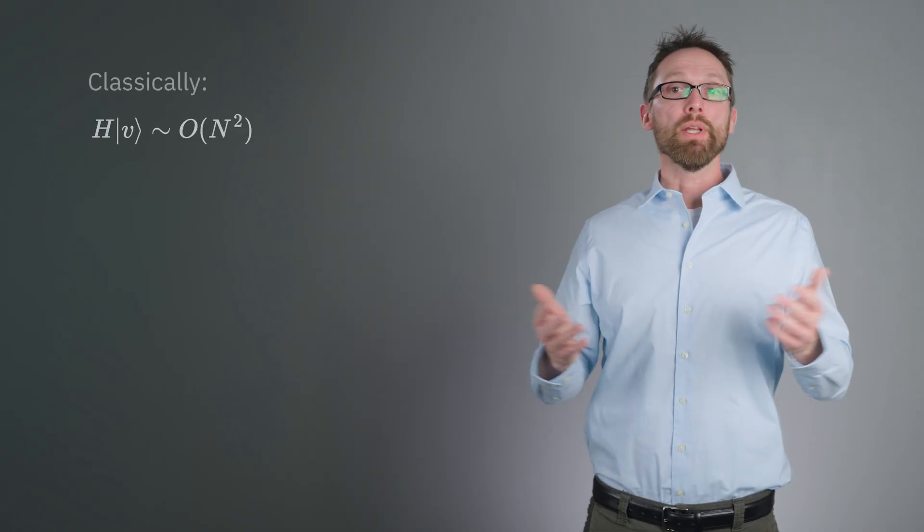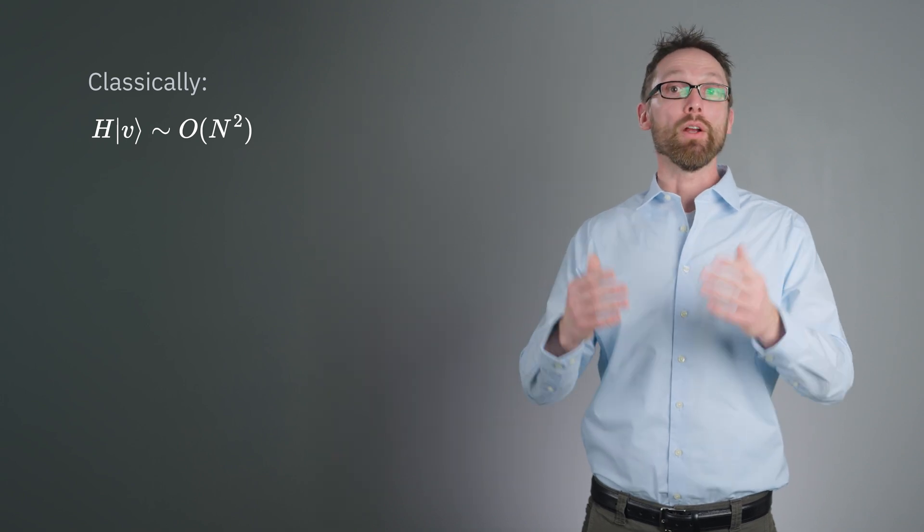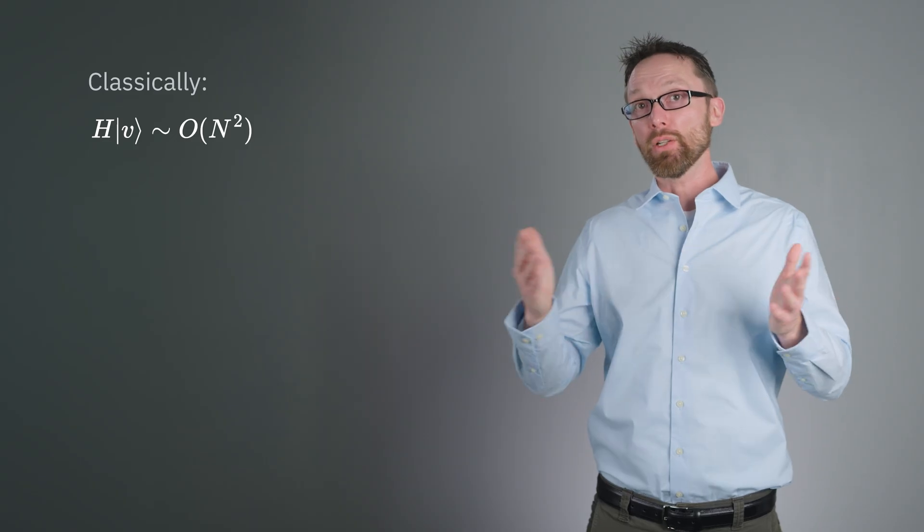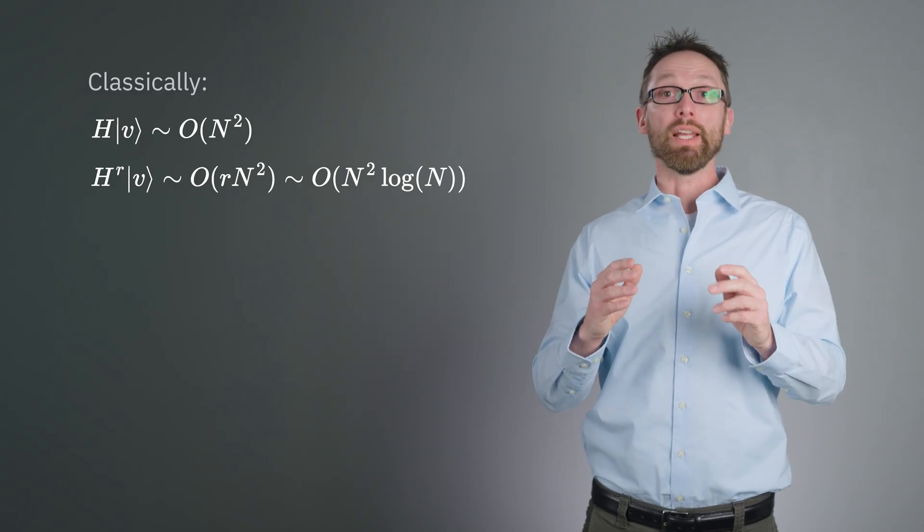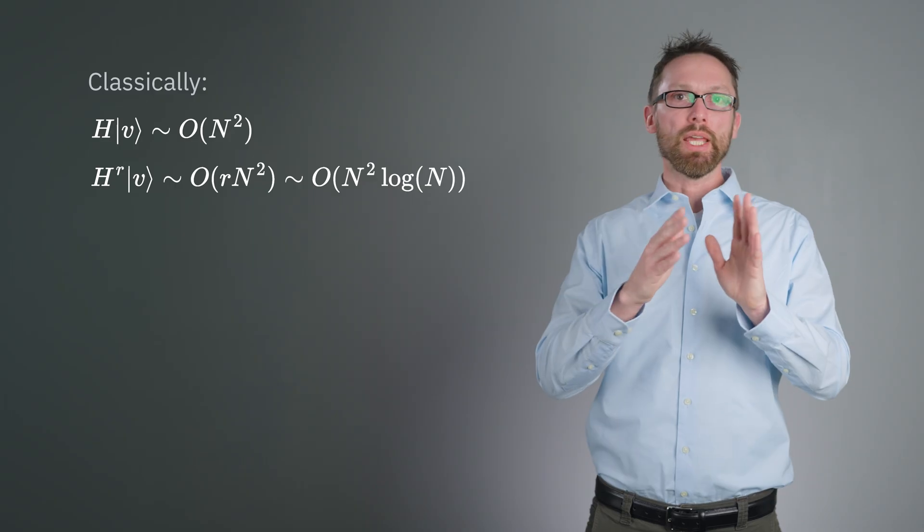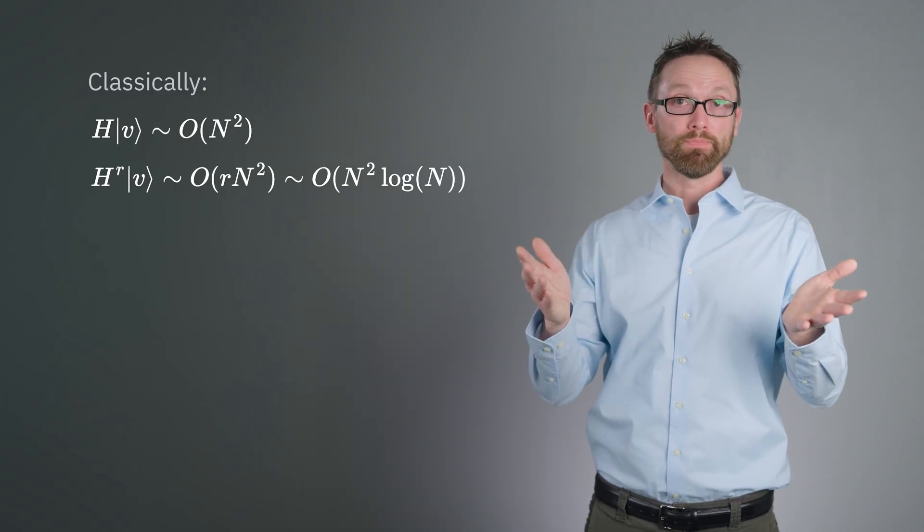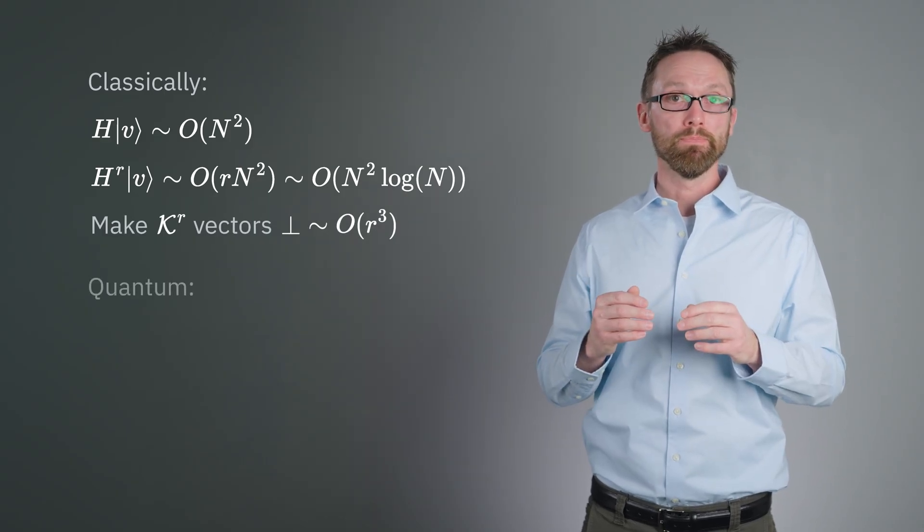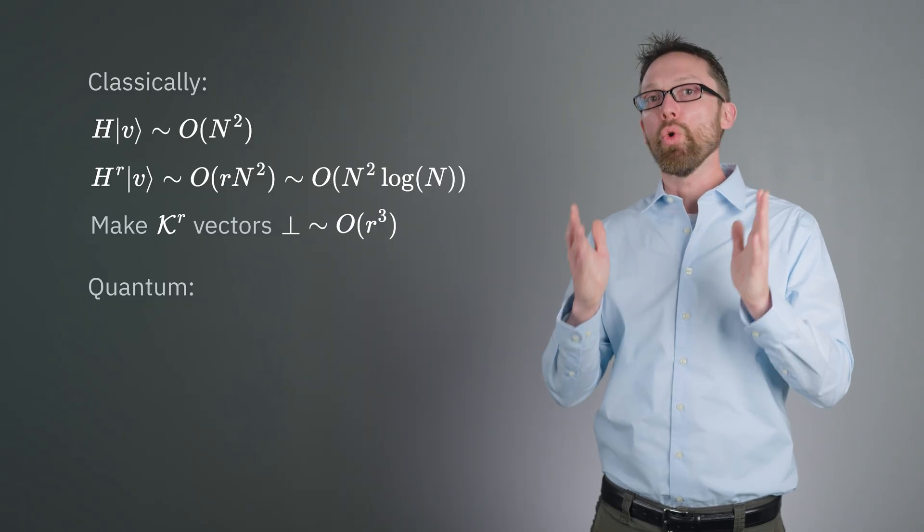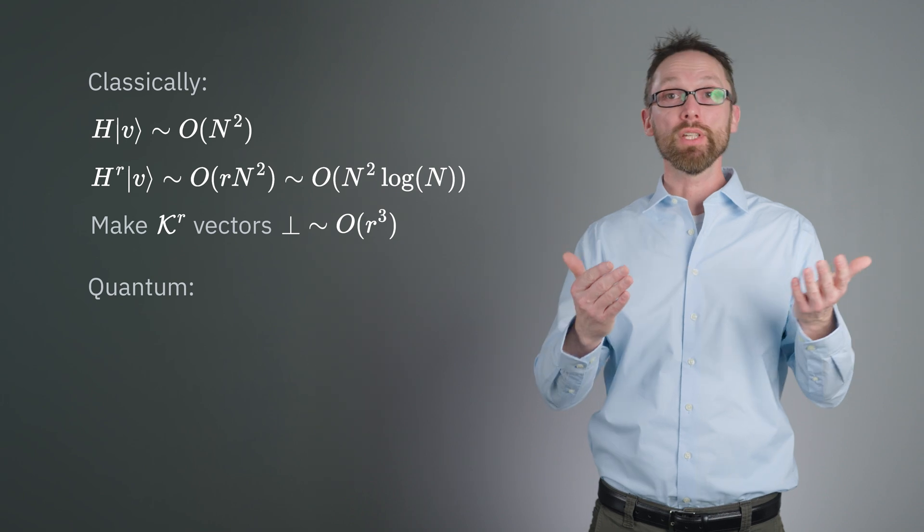Everything we've described so far can be done classically. So how and when would we use a quantum computer? For very large matrices, the Krylov method can require long computing times and large amounts of memory. The time required for matrix operation of H on V scales like n-squared in the worst case. And this is done for every vector we want in our subspace. The subspace dimension R is usually not a significant fraction of n and often scales like log of n. So generating all vectors scales like order n-squared log n. Although there are other steps, like orthogonalization, this is the dominant scaling to keep in mind.